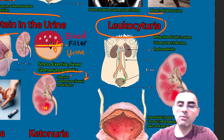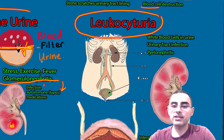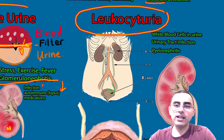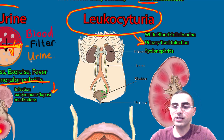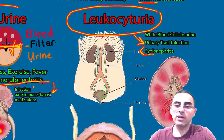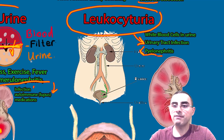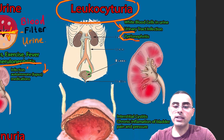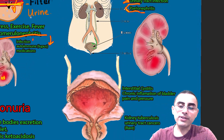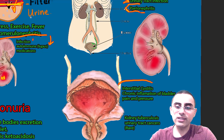Leukocyturia is the third most common finding, meaning white blood cells in the urine. It is usually caused by urinary tract infections. The second most common cause is pyelonephritis, which is a more severe form of urinary tract infection accompanied by fever and more significant pain.